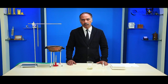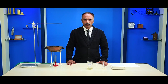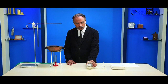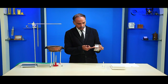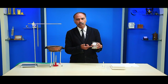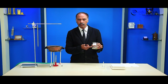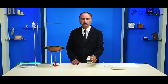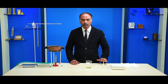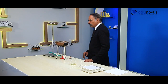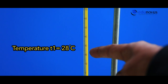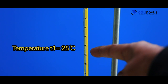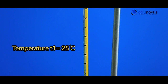Now let us move on to the step-by-step procedure to perform the experiment. First, we need to measure the temperature of the coconut oil. The temperature of the coconut oil is equal to the room temperature, so let us measure the room temperature using a thermometer. Here, the temperature is 28 degrees centigrade. Note this temperature as T1.